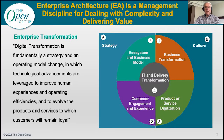Enterprise architecture, I've asserted, is a management discipline for dealing with complexity and delivering value. And the model on the right summarizes some of the dimensions we as architects must consider when architecting: strategy and culture, ecosystems and business models, business transformations. We as agents of the transformation are architecting for the delivery of products and services to customers via changes in strategy, operating models, technologies, and operating efficiencies.